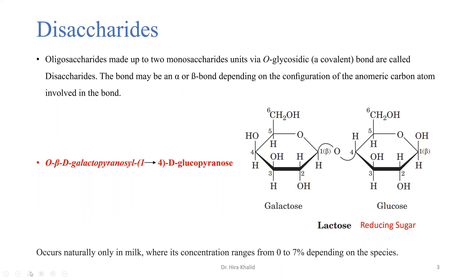Now, looking at this slide, I have mentioned an example of a disaccharide — lactose. You may be familiar with the word lactose or lactic acid. This is a carbohydrate present in milk, naturally available only in milk, with concentration varying from zero to seven percent depending on the species. Lactose is made up of two monosaccharide units: galactose and glucose.